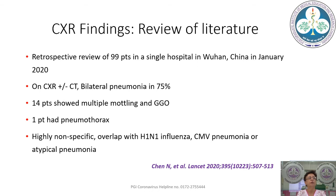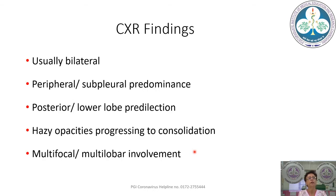In a retrospective review of 99 patients in Wuhan, China (January 2020), bilateral pneumonia was present in 75% on chest radiograph or CT; however, findings were highly non-specific with overlap with H1N1 influenza, CMV pneumonia, and atypical pneumonia. To summarize chest X-ray findings: abnormalities are usually bilateral with peripheral subpleural predominance, predilection for posterior parts and lower lobes, hazy opacities progressing to consolidation, and multifocal multi-lobar involvement.